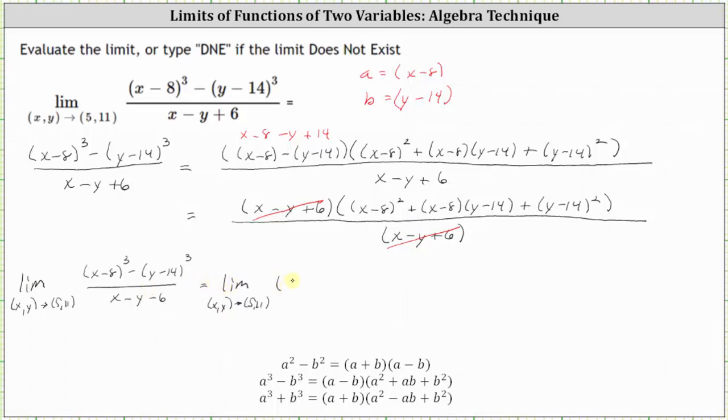The original limit is equal to the limit of the quantity (x - 8) squared plus the quantity (x - 8) times the quantity (y - 14) plus the quantity (y - 14) squared.